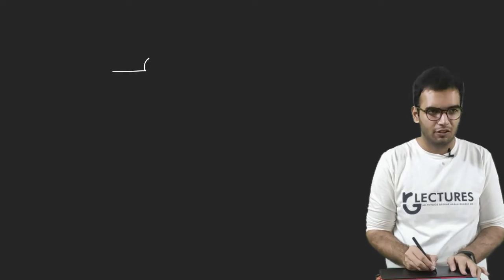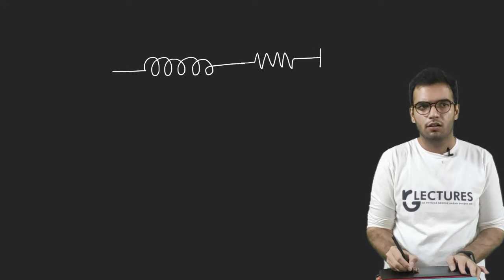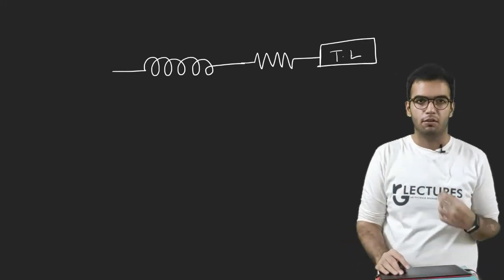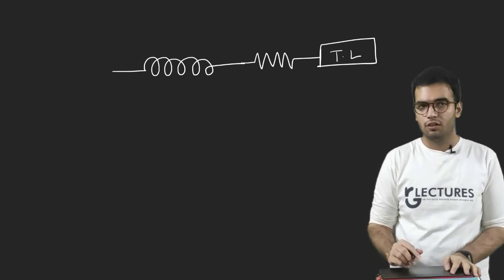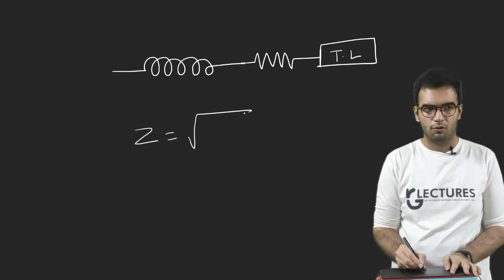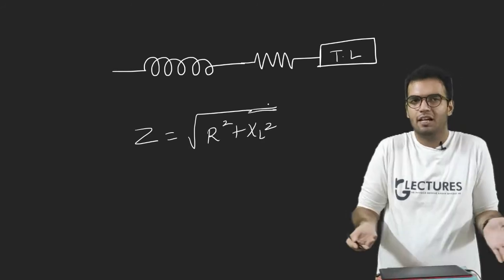So what do we do? We connect an LR circuit. We connect an inductor in series with a resistor before connecting it to a tube light. Now what happens? The total resistance becomes impedance, because now this becomes R² + XL², because I have connected an inductor.